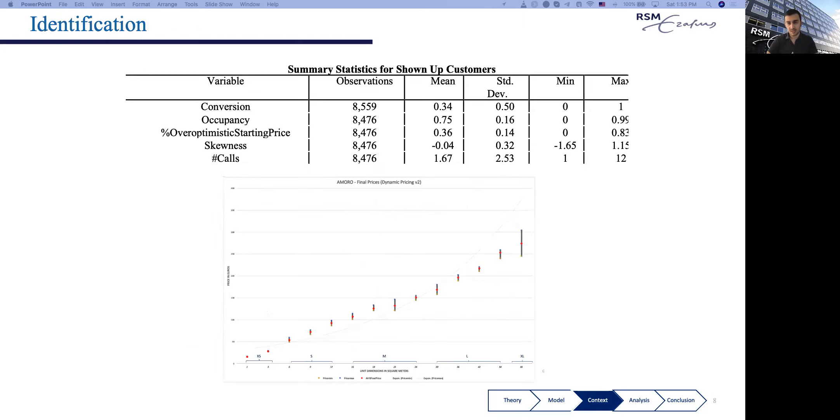With that in mind, I want to show the identification steps. We look at all customers in a timeframe of one year who showed up at locations and study their conversion behavior, their purchase decision. We also look at the occupancy of the class they requested to purchase from, meaning that if occupancy is higher, there are essentially fewer products to purchase. We record the percentage of overoptimistic starting prices within the requested class of the customer. The more this percentage, the more left-skewed the price ranges are. We also control for some other variables, which I will discuss in the following slides.